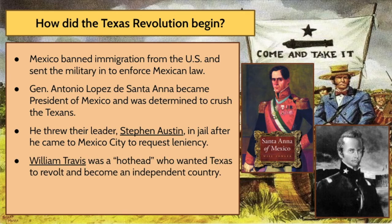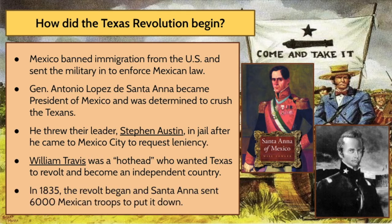William Travis was a hothead who really wanted to fight back against Mexico, have a revolution, and get Texas out from under the thumb of Santa Ana. He wanted Texas to revolt and become an independent country. That's William Travis in the lower right-hand corner, and obviously this is President Antonio Lopez de Santa Ana.